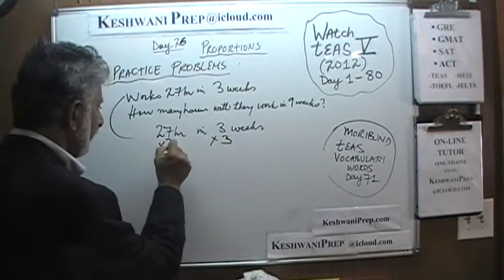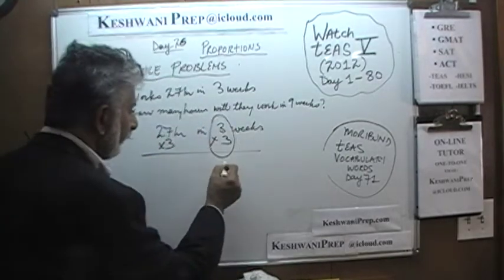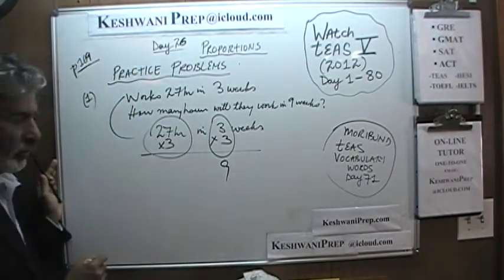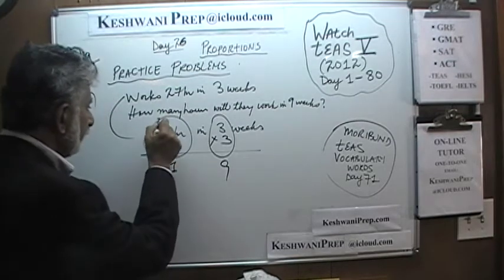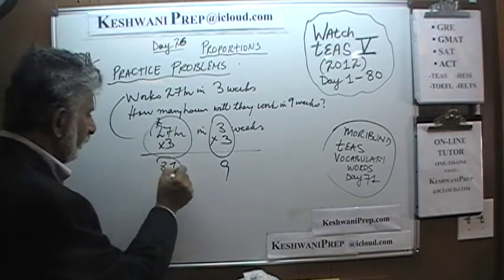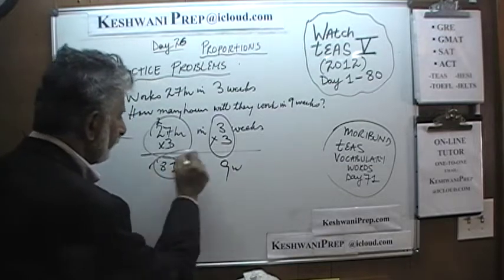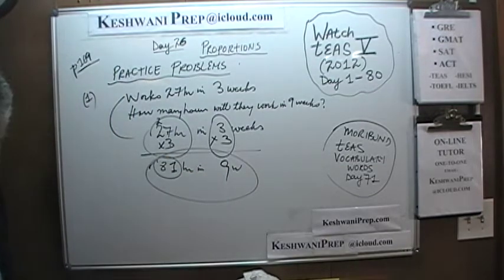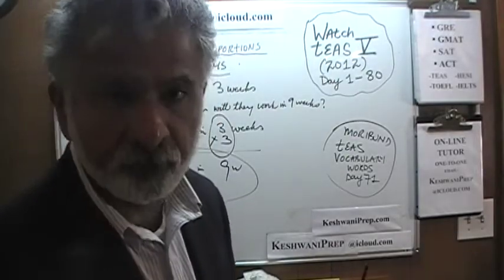Multiply both sides by 3 and we will have our answer. Here we will have our 9 weeks and here we will know how many hours they work. 7 times 3 is 21, 1 carry 2, that's 6 and 2. They will work 81 hours in 9 weeks — a grand total of 81 hours in 9 weeks.